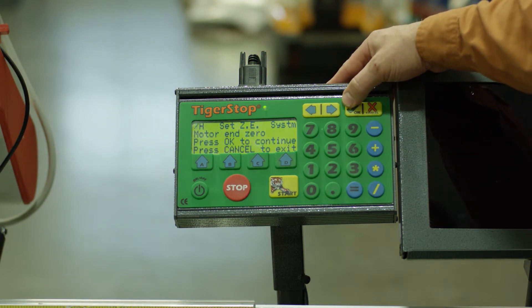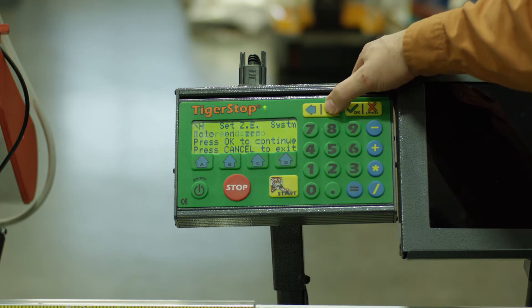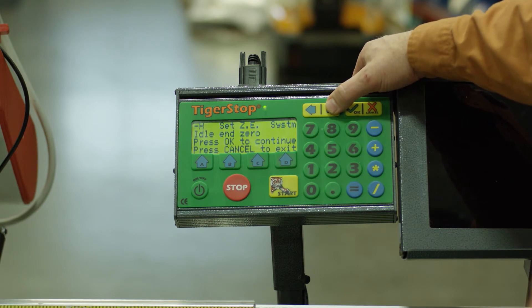We're going to press OK, and then at that point we can change from motor end to idle end zero. If your idle end is zero, that means that your motor is away from the tool and your idle end is closer to the tool.